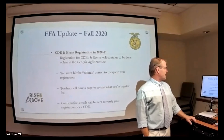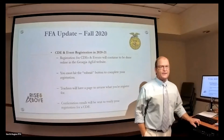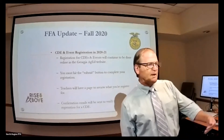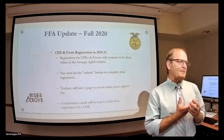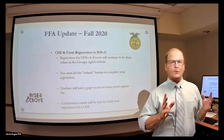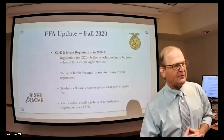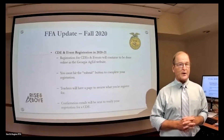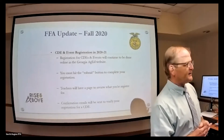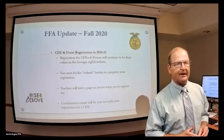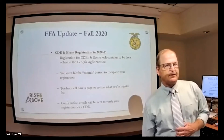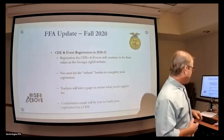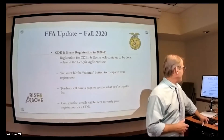Event registration will continue to be through the Georgia Ag Ed website. You've got to hit submit to complete your registration. This year, there is a page you can go on to see what you have registered for. In the past we've always had on average one team at each event that shows up unregistered — mostly because they forgot to hit submit at the end. This year you'll have an easy button to click to show you what you've registered for, so you don't have to wonder.